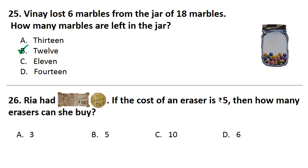Next question. Rhea had 1 ten rupee note and 1 five rupee coin. If the cost of an eraser is Rs. 5 then how many erasers can she buy? Answer is Option A. That is 3.